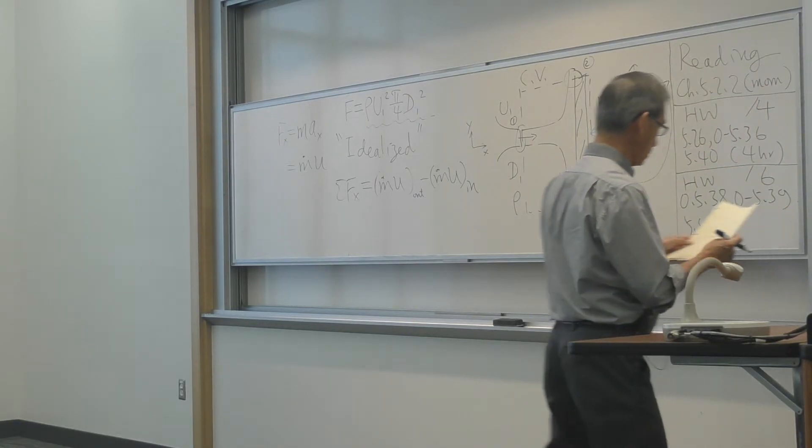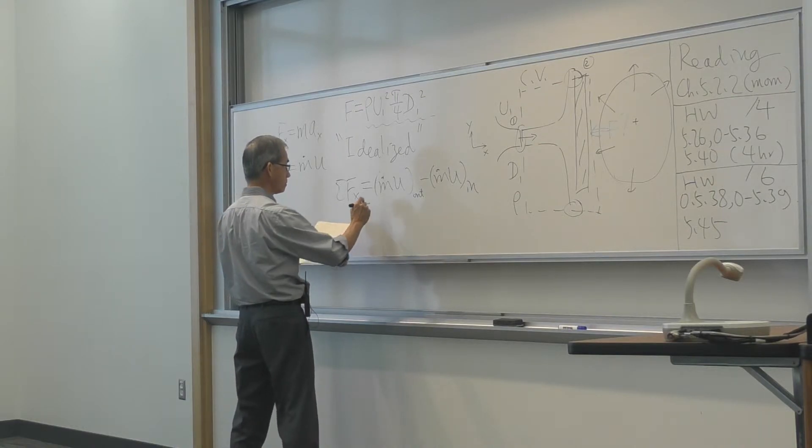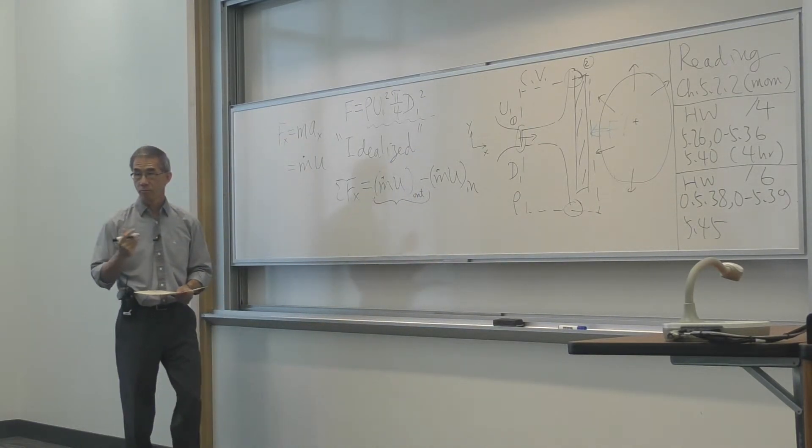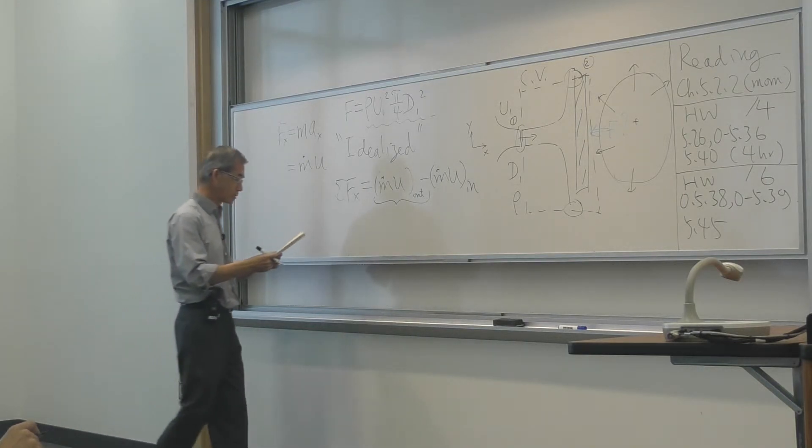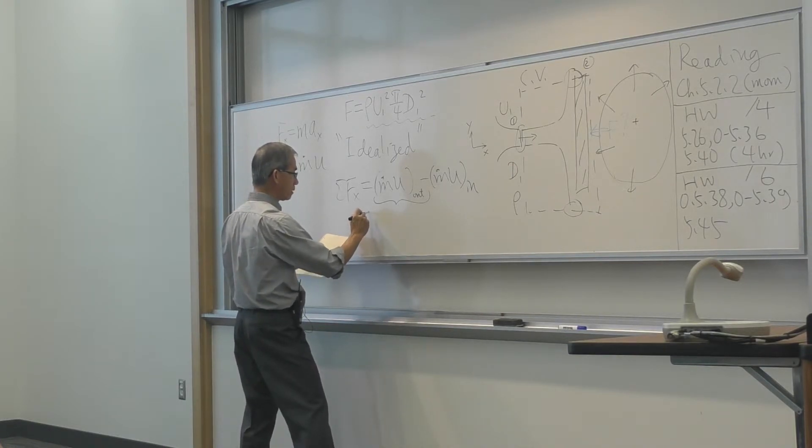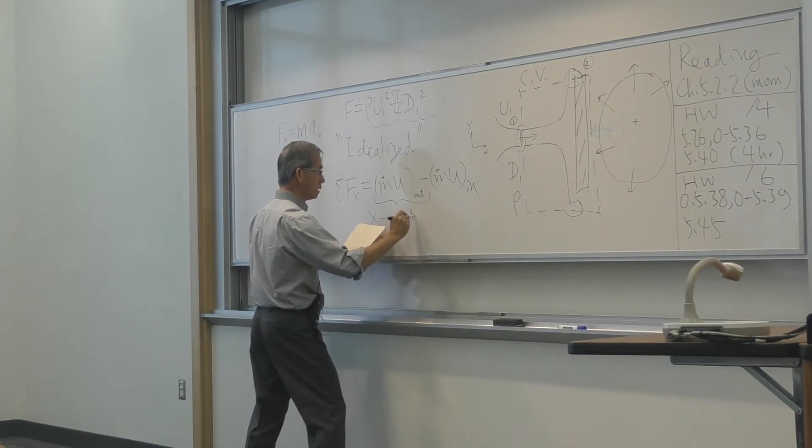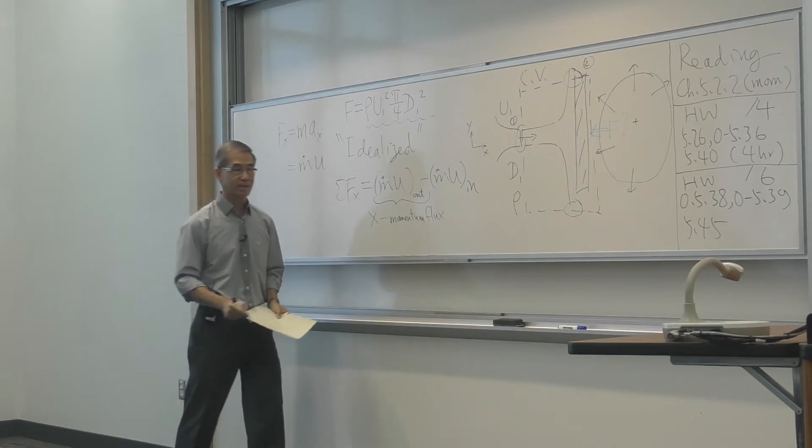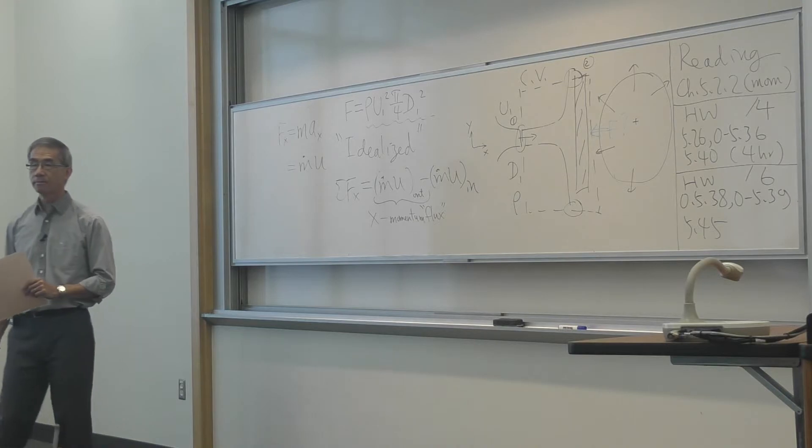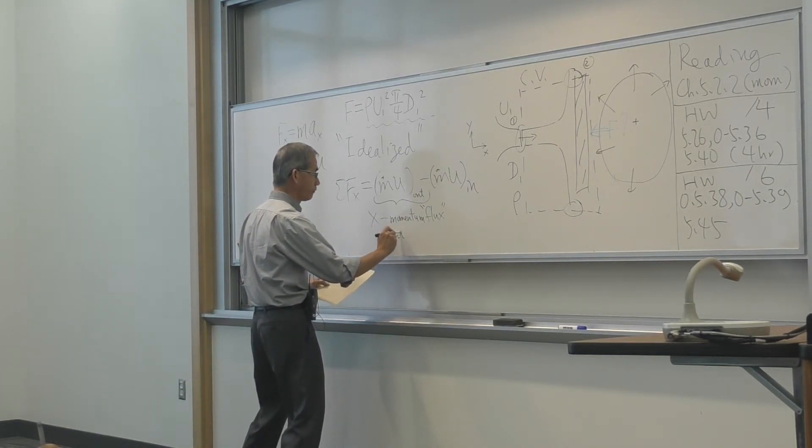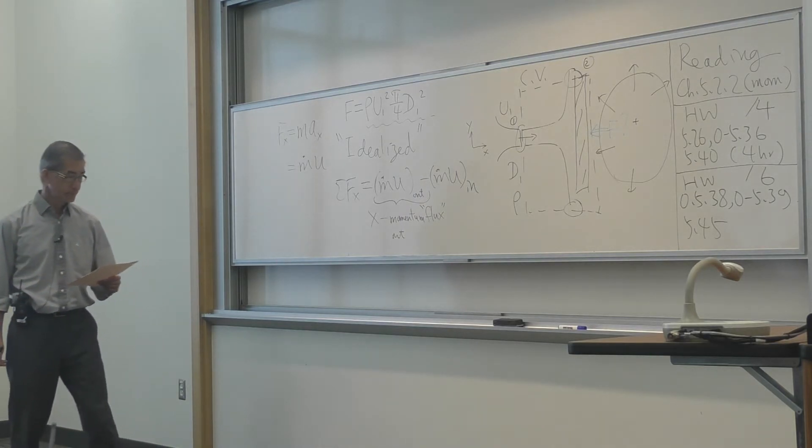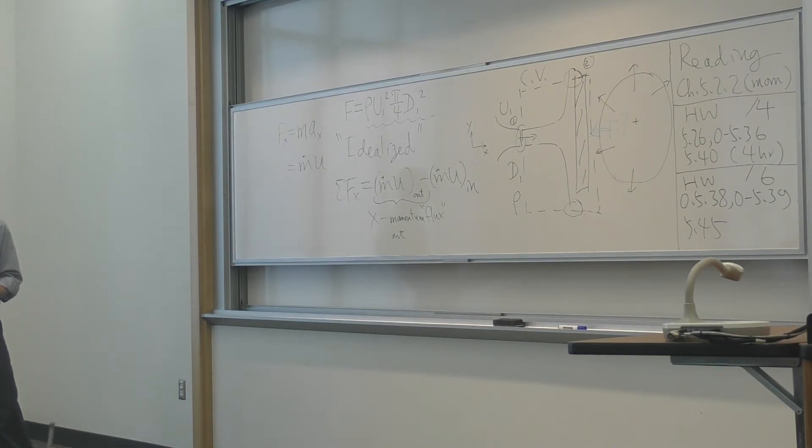So now I'm going to give you a new vocabulary or term. The product of M dot, which is mass flow rate, not mass but mass flow rate rho V A, kilogram per second, times the velocity in the x-direction, we'll call it from now on x-momentum flux. Flux - you may have seen that in electrical theory, electromagnetic flux. The O subscript stands for momentum flux leaving, getting out of my control volume, whereas the second term is x-momentum flux coming in to my control volume.